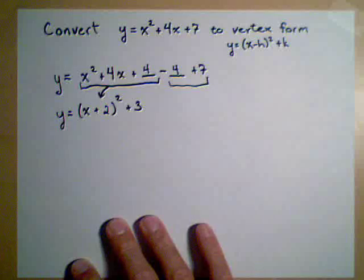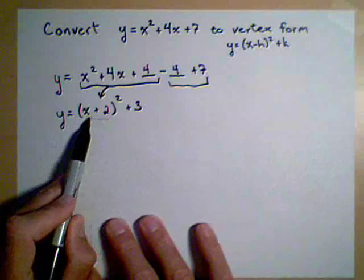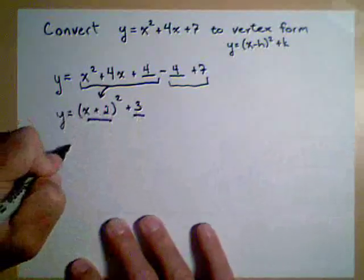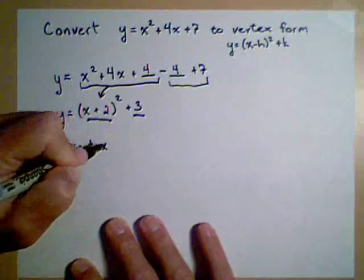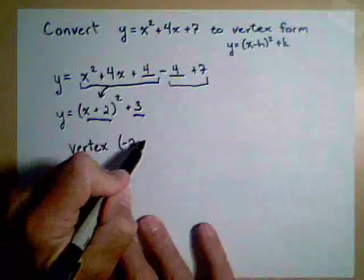We can now look at this as a shift of the graph of y equals x squared. What's nice about that is it makes it easy to identify the vertex because it's shifted left 2 because of this here, and shifted up 3. So we know that this quadratic will have a vertex at the point negative 2 comma 3.